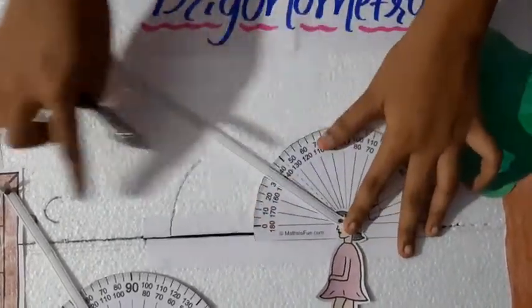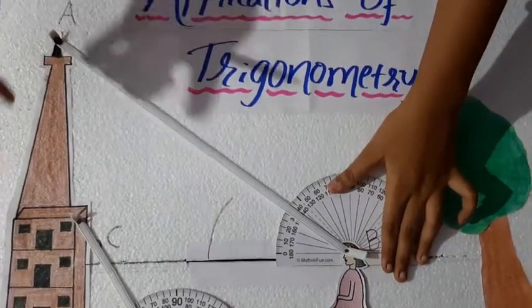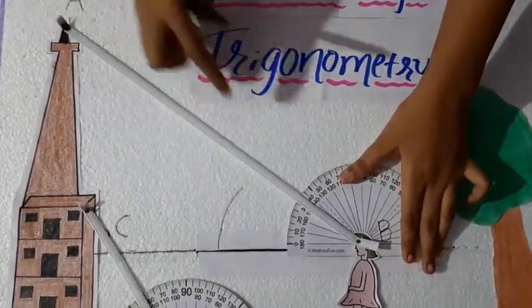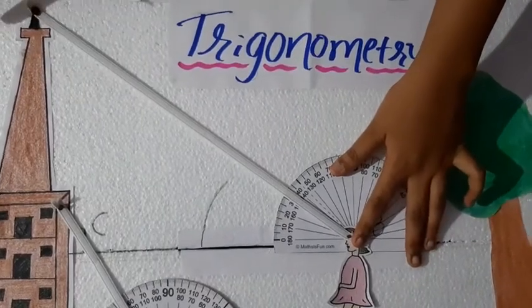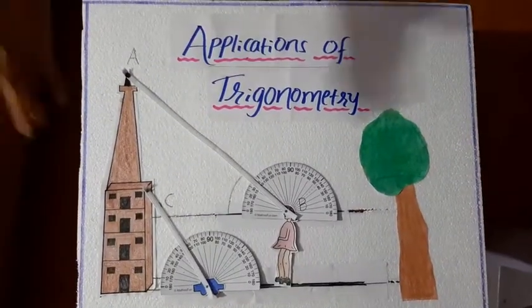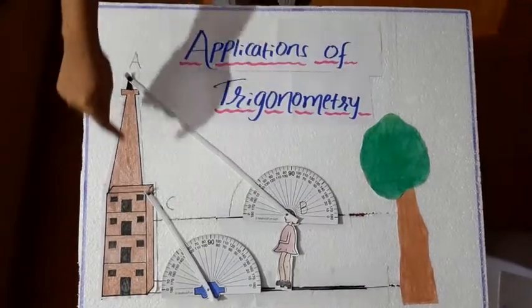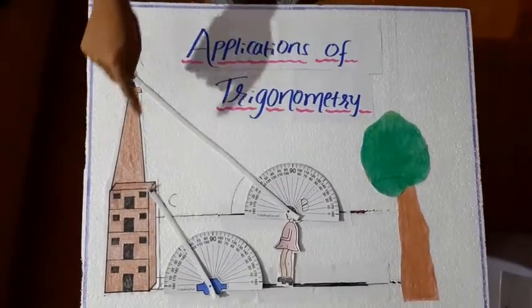Now, again this BC equal to, this is again 10 meters. 10 divided by 1 by root 3. That's 10 root 3. So, like this easily we found out these two sides of the right angle triangle.